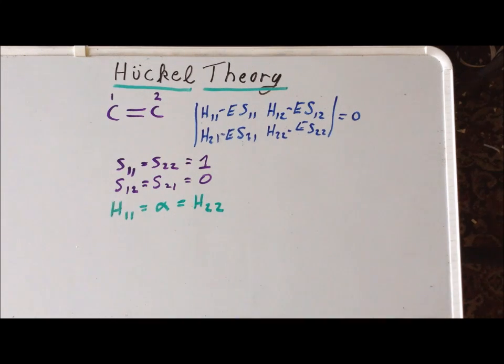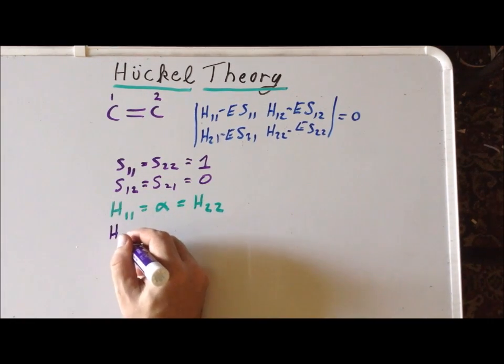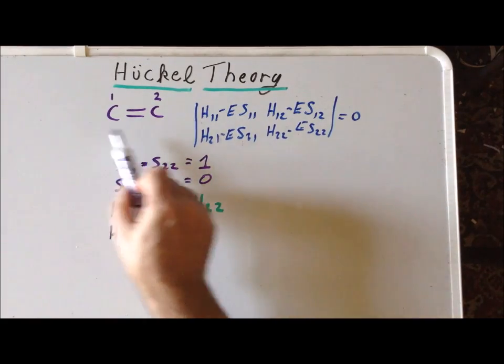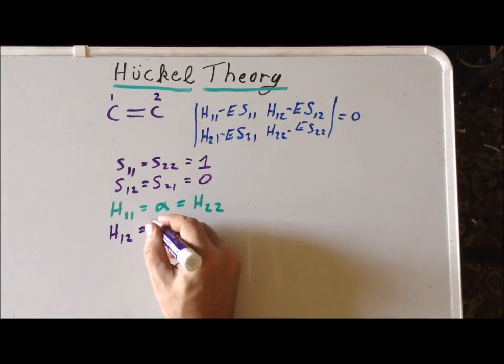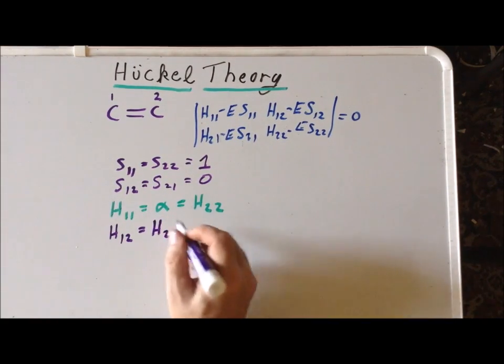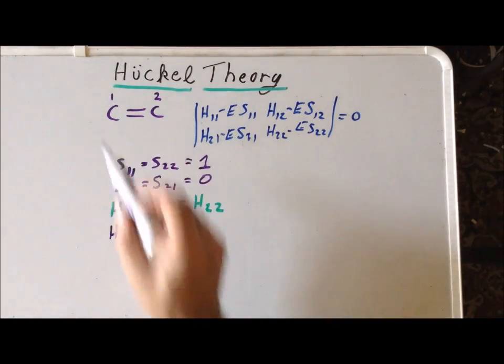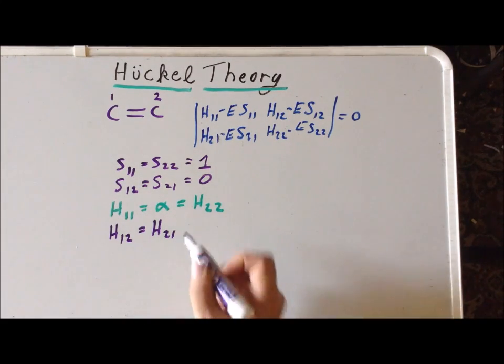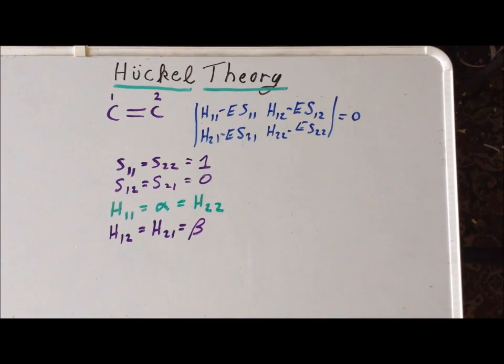On the other hand, for H₁₂, this is a resonance integral. This is the energy of an electron in a bond shared between atoms 1 and 2. Within the Hückel system, the important feature is whether the two atoms are directly connected. If they're directly connected, this integral H₁₂, which equals H₂₁, is defined to be this value beta, which is normally a negative number.